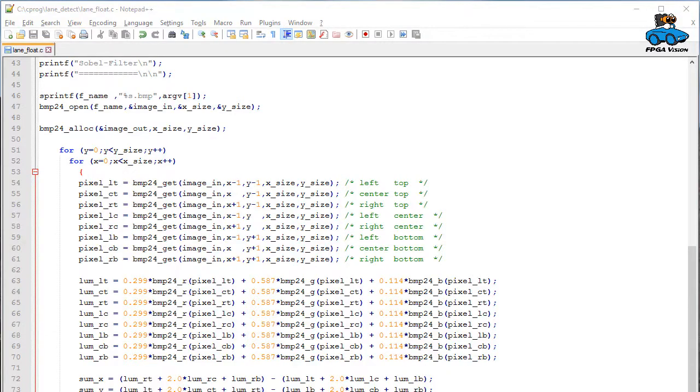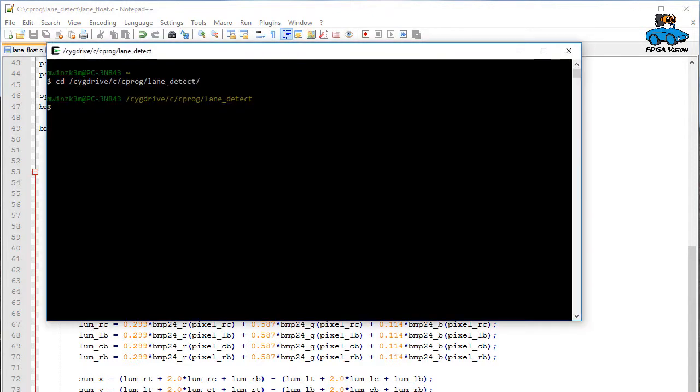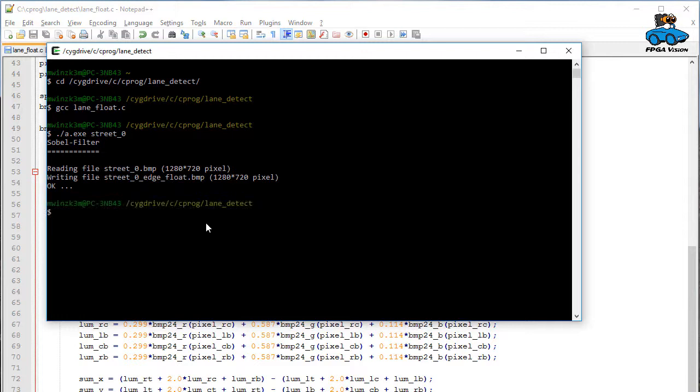So, let's have a look at this processing. Here is the program code. We don't go into details on that. You can have a look at it on your own. Here you have a terminal, where you can compile the C file: gcc lanefloat.c. Then you can execute it and give the name of the test images as an argument. You can do this for different images to check the performance.